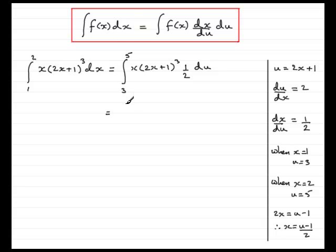So we have the integral going from 3 to 5. x then is u minus 1 over 2. So I'll pop that in, u minus 1 over 2. 2x plus 1, well, that's u. So then that becomes u to the power 3. So we have u cubed. And then we have the half du.